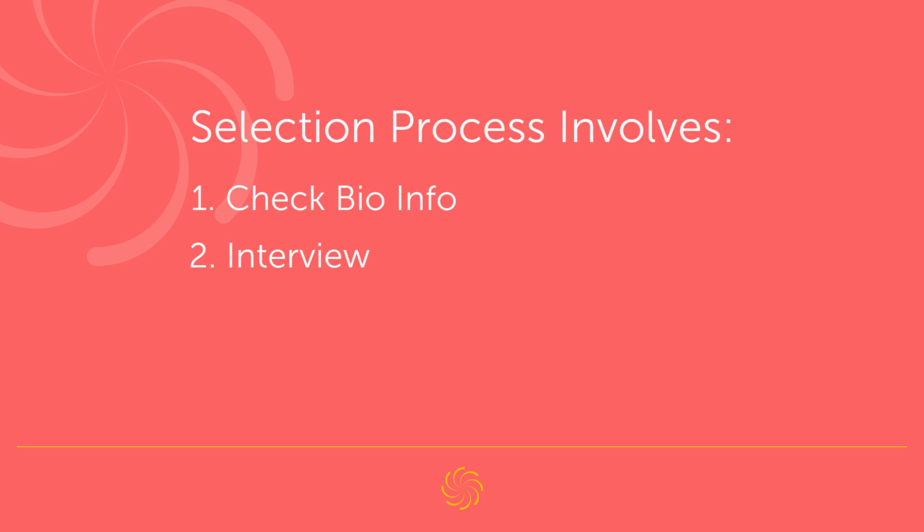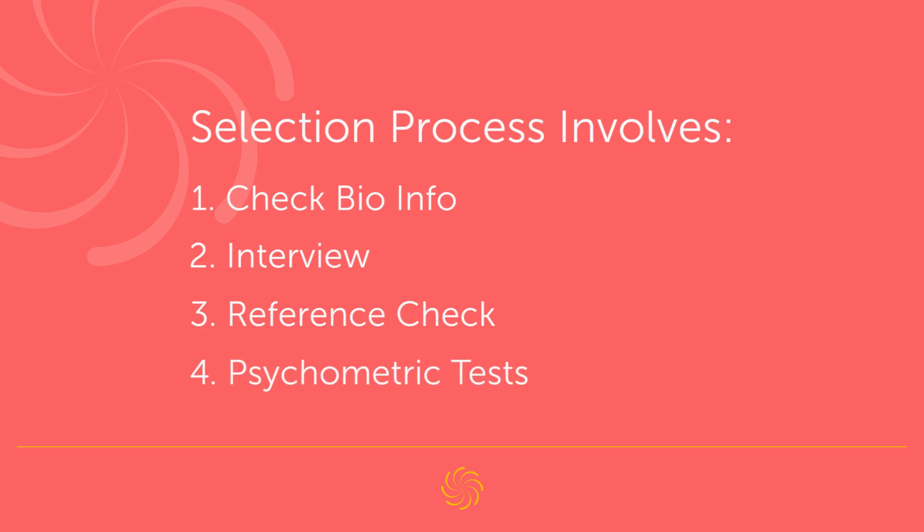The third step is engaging in a reference check, where organizations speak with people who have previously worked with the potential candidate. Some organizations also go into a fourth step: psychometric testing. These tests gather information around aptitude and cognitive abilities, and sometimes organizations also use personality tests. There is nothing wrong with leveraging these tests, but keep in mind that the validity scores are quite low and they can produce socially desirable results. Take them as a data point in your overall assessment, but not as scientific data.